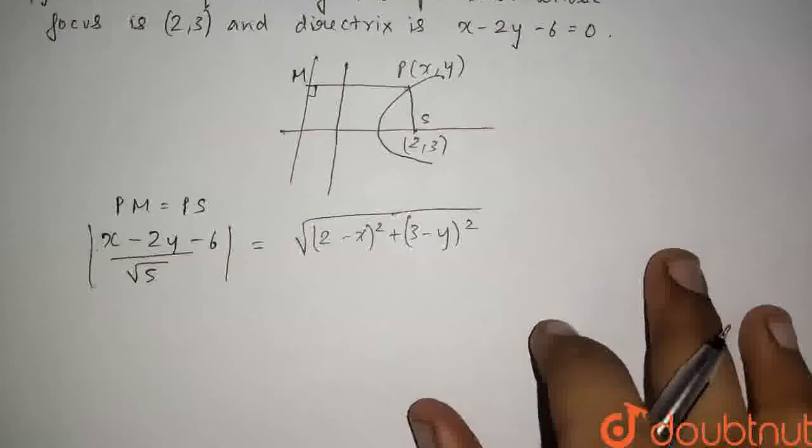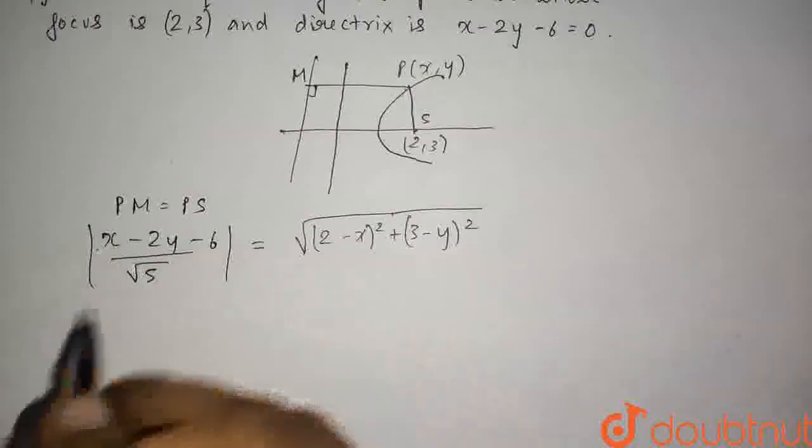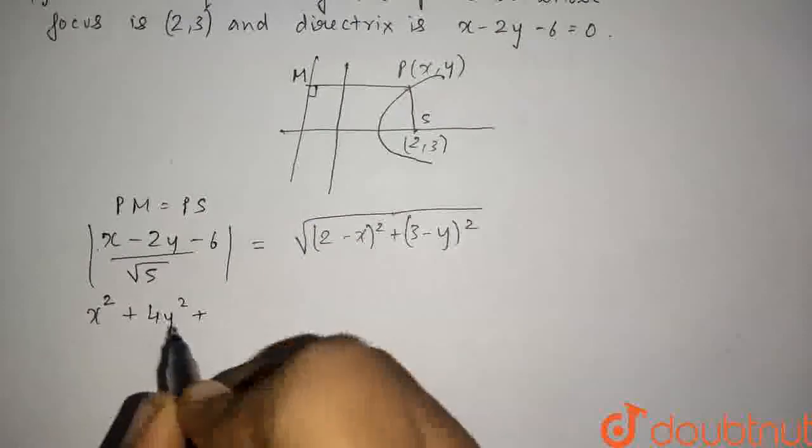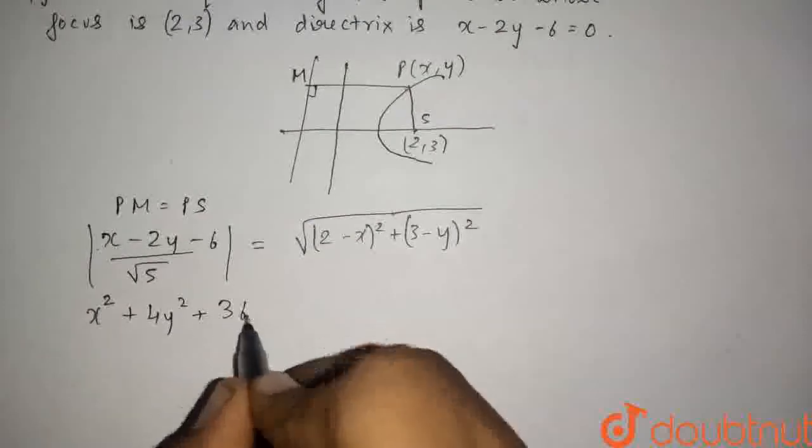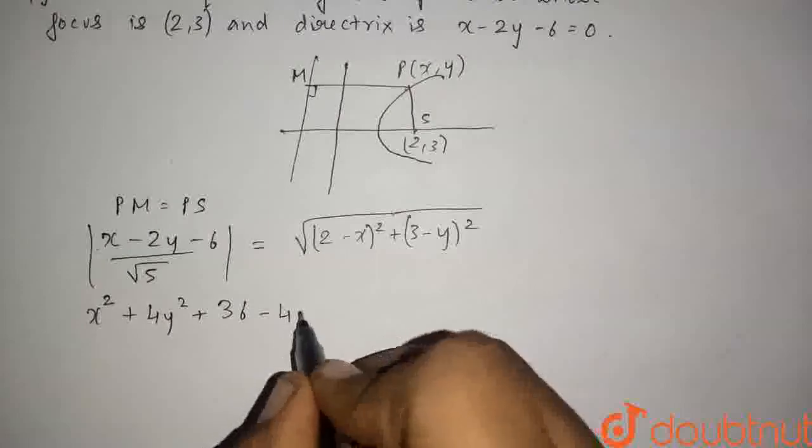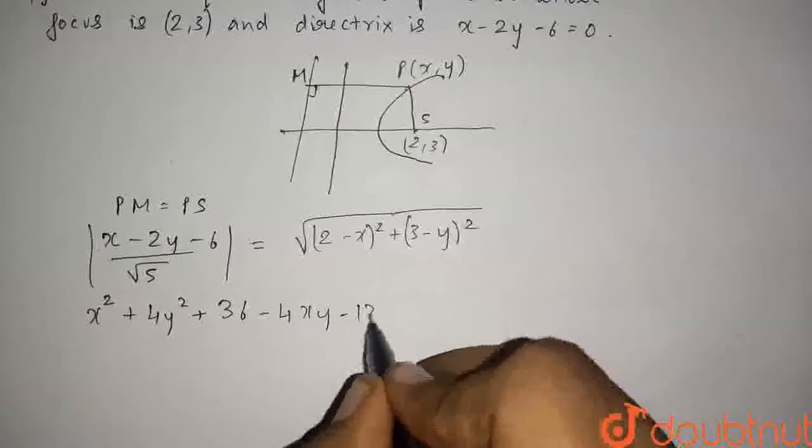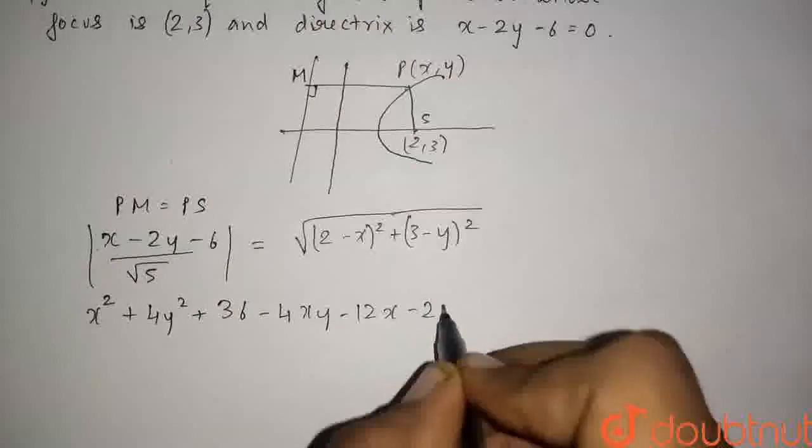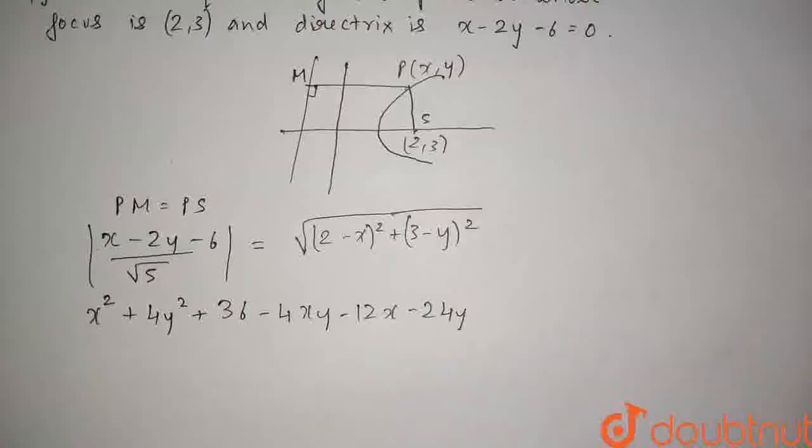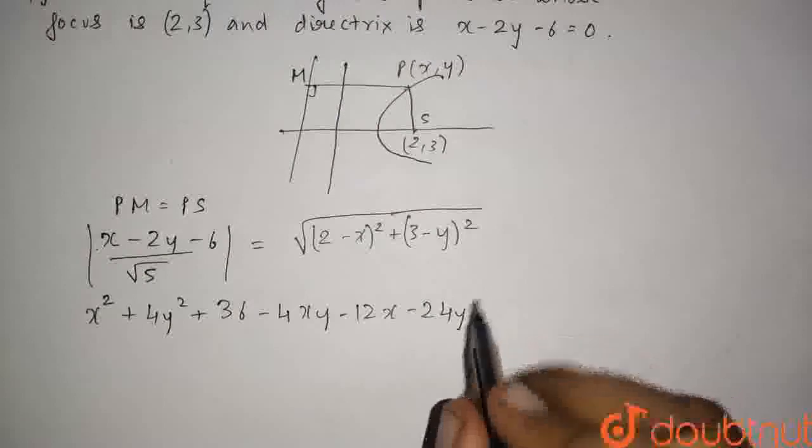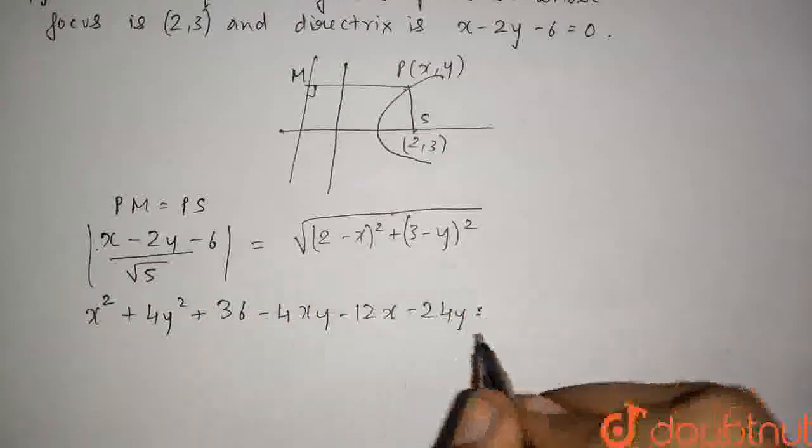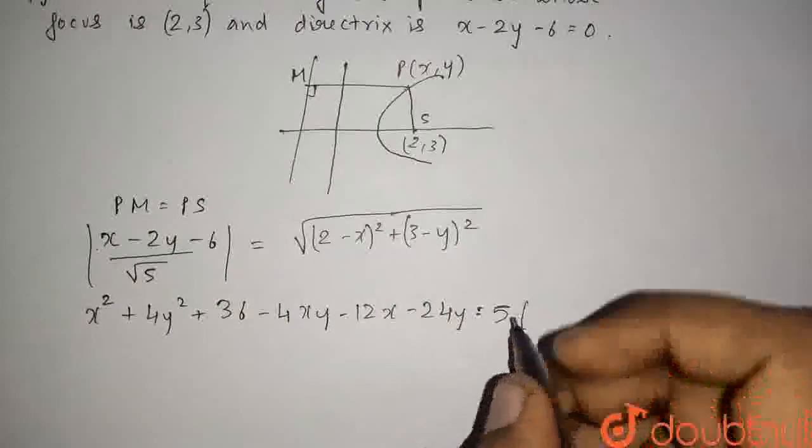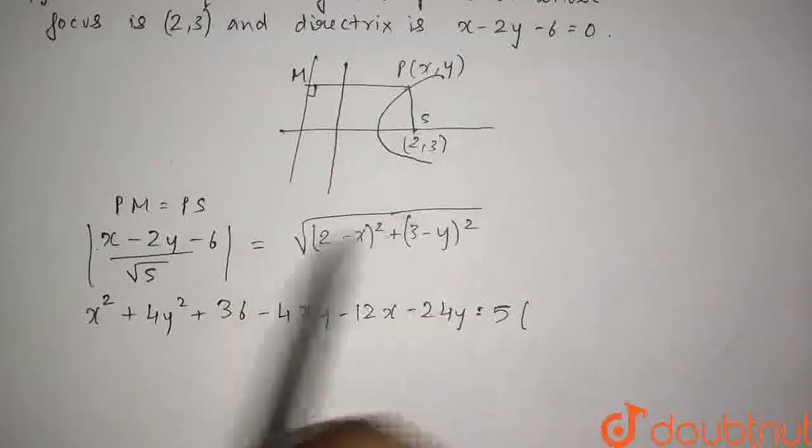Now, we have to solve this further for the equation. We will square on both sides. We will get x² + 4y² + 36 - 4xy - 12x + 24y. On the left-hand side, on the right-hand side we will get root 5 squared. I will shift this root 5 to the right-hand side, so it will be 5 times this, the square root will be opened.